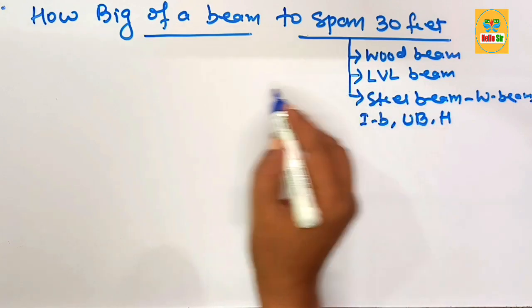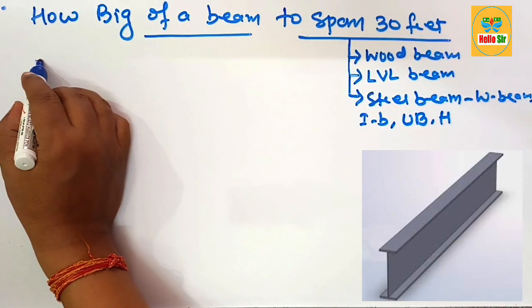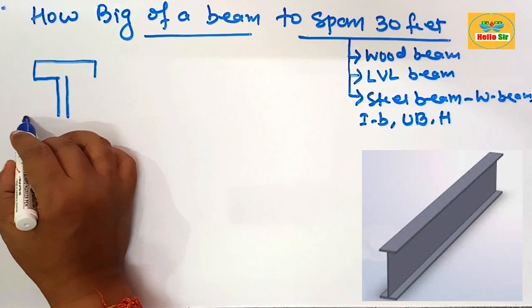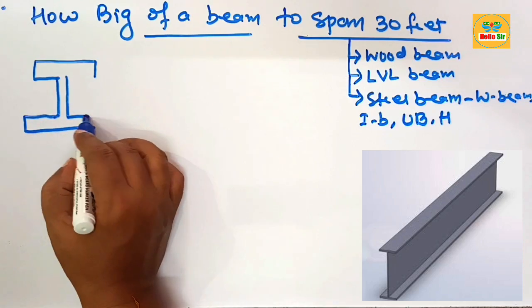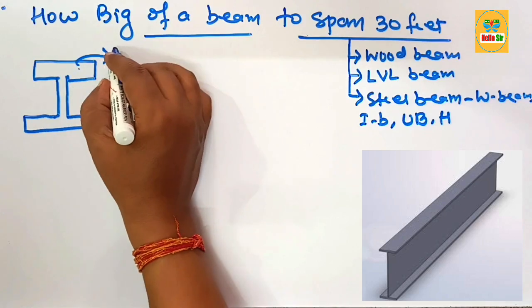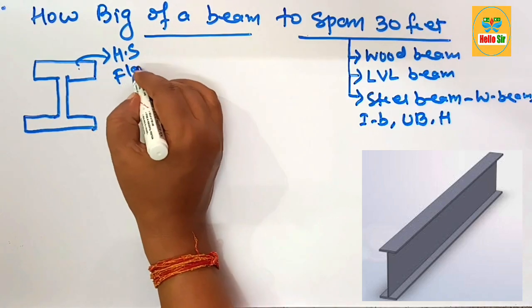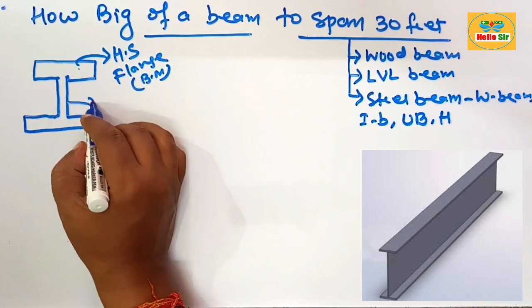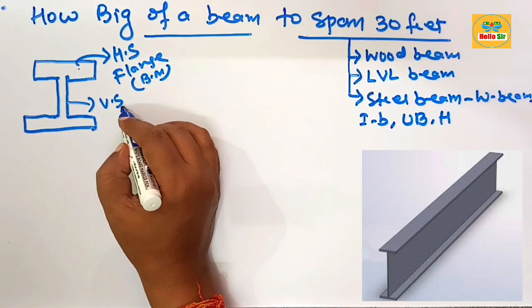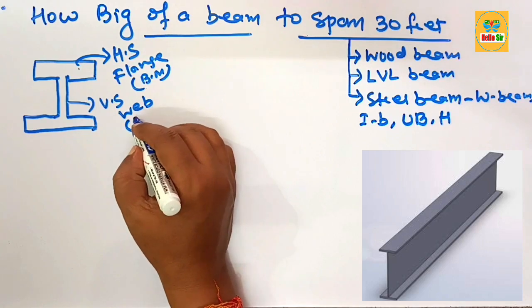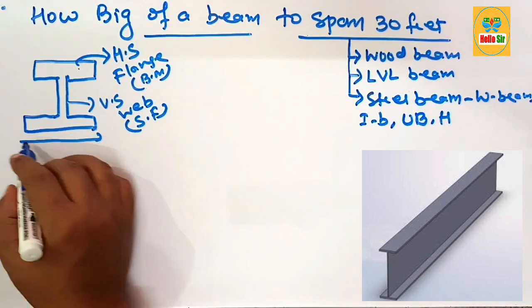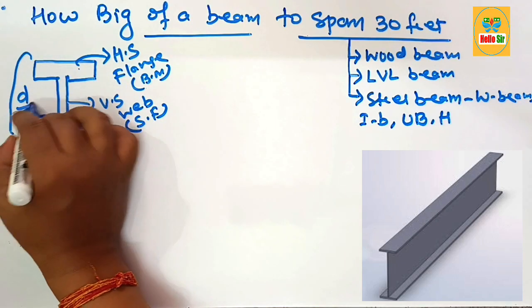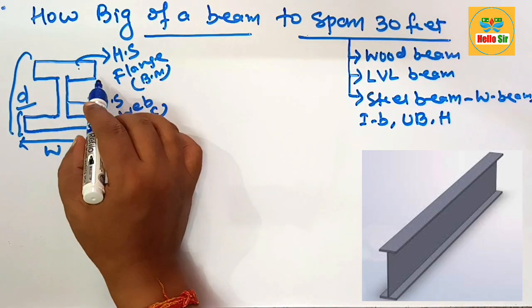Here we make a rough diagram to understand the American wide flange beam. The horizontal section is known as the flange, which generally resists the bending moment acting on the beam. The vertical section is known as the web, which generally resists shear forces. The width of the flange is the thickness of the flange, and this dimension is the depth of the steel beam. There are several dimensions for the steel beam.